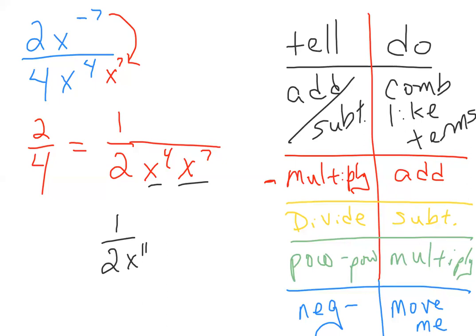But that's a quick step-by-step of what happens when we have power-to-power, negative exponents. Things move, they change. Hopefully this helps. We'll see you next week. Have a good day.